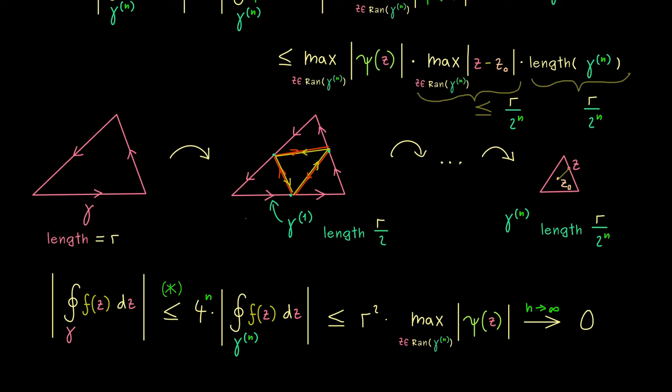This means we can make the left-hand side as small as we want — in other words, the left-hand side must be 0. And there we have it: this is exactly what we wanted to prove. Hence Goursat's theorem is proven. Thank you for being with me until the end of the proof. In the next video we will generalize this result, so I hope to see you there. Have a nice day!